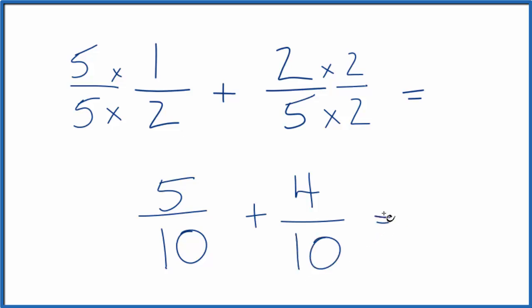So you see now I have the same denominator, the number on the bottom here. All I have to do: 5 plus 4, that gives me 9, and then we just bring the 10 across—9 tenths. So 1 half plus 2 fifths, that's 9 tenths.